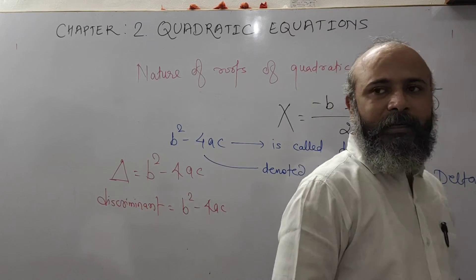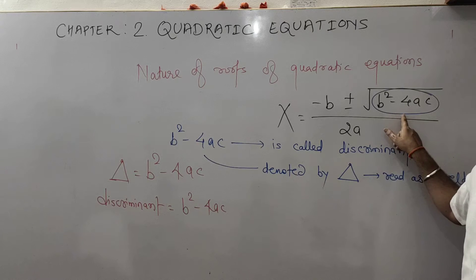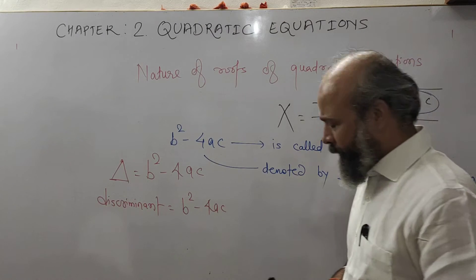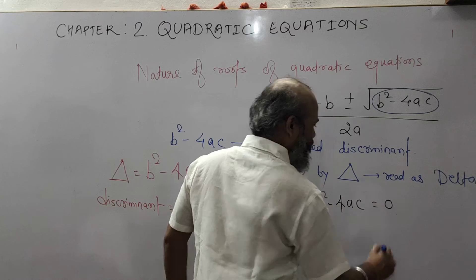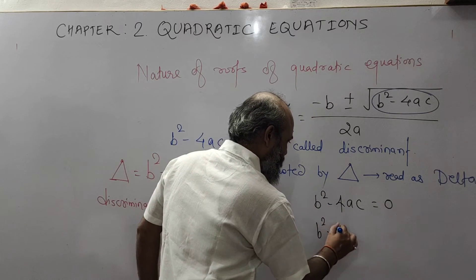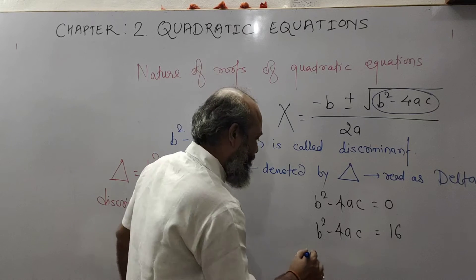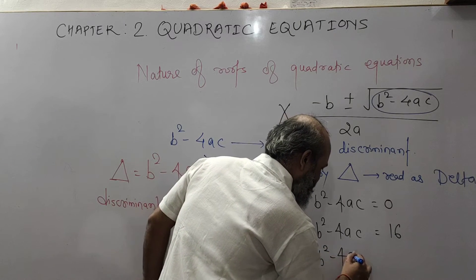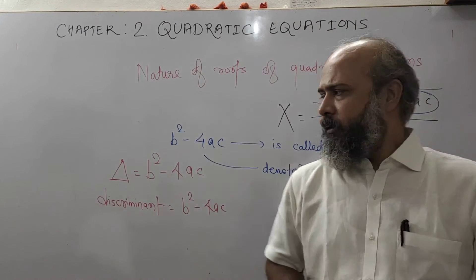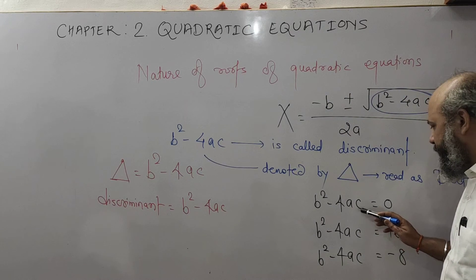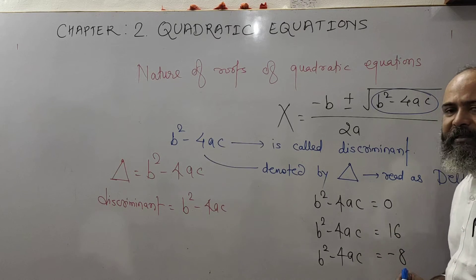While solving a quadratic equation by the formula method, you have calculated the value of B square minus 4AC. Sometimes B square minus 4AC is 0, sometimes it is 16, and sometimes you get the value of B square minus 4AC as minus 8. So there are different values of delta.